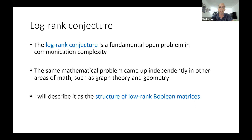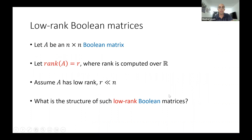The log-rank conjecture is a very famous open problem that came up in several areas — mathematics, computer science, originally graph theory, then communication complexity, geometry, and other areas. All these questions are essentially about studying the structure of low-rank boolean matrices. The mathematical question is: if you have a matrix that is both low-rank and boolean, what kind of structure should it have? We're connecting an algebraic property — low rank — to a combinatorial property — having boolean entries.